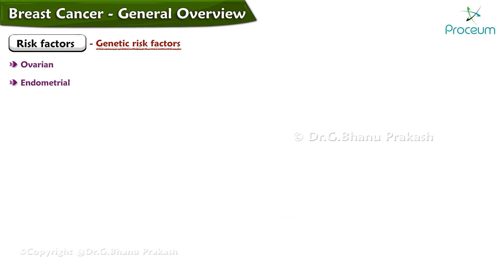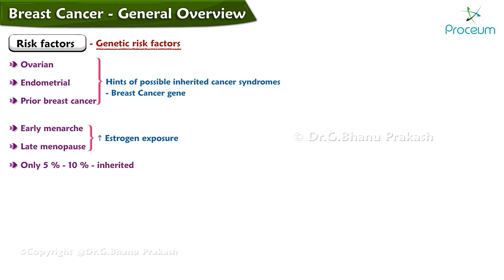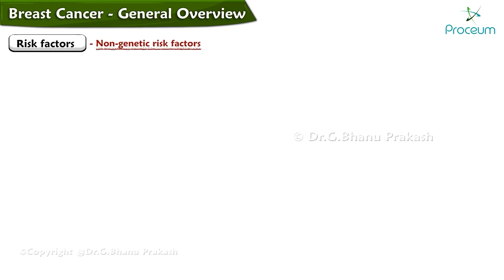Other risk factors include ovarian, endometrial, or prior breast cancer, and possible inherited cancer syndromes such as BRCA. Early menarche or late menopause increase estrogen exposure, but overall only about 5 to 10 percent of breast cancer is inherited.